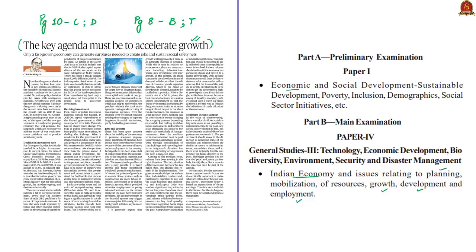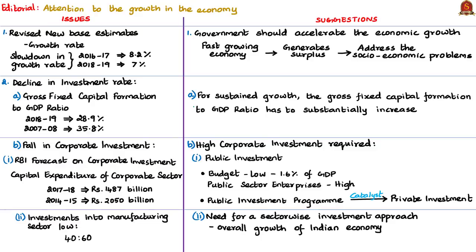The author has mainly touched four important areas: investments, banking sector, employment and agrarian distress. These issues and their corresponding suggestions are presented in a comparison format. The author also discusses the importance of social safety nets. The editorial begins with official data of revised new base estimates for the growth rate — 8.2% in 2016-17 and 7% in 2018-19, clearly indicating that growth is slowing down.